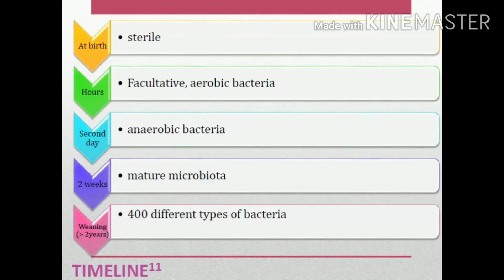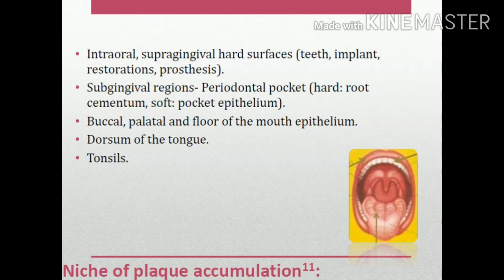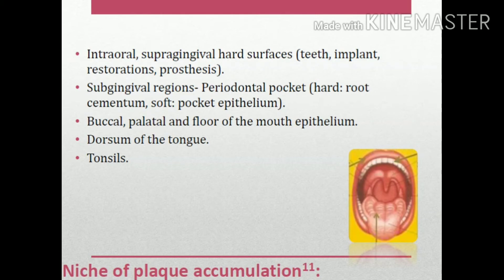The timeline of oral microbiome development: at birth the oral cavity is sterile. Within hours, facultative aerobes appear; by day two, anaerobes appear; by two weeks, a mature microbiota is established; and when the child is greater than two years, after weaning, about 400 different types of bacteria colonize the mouth. Niches of plaque accumulation include supragingival hard surfaces (teeth, implants, restorations, prostheses), subgingival regions (periodontal pockets, root cementum), and soft tissue surfaces (pocket epithelium, buccal, palatal, floor of mouth, dorsum of tongue, tonsils).